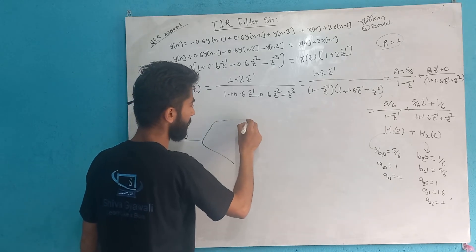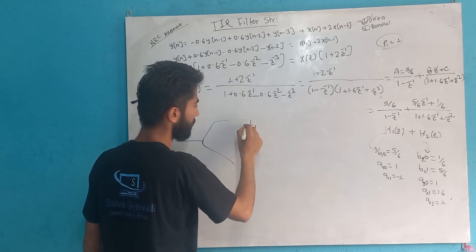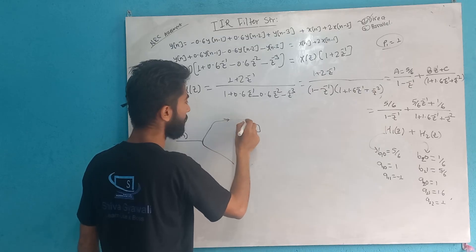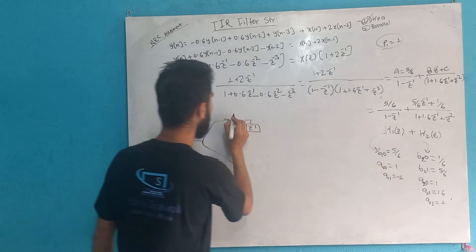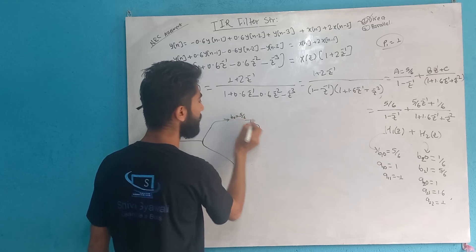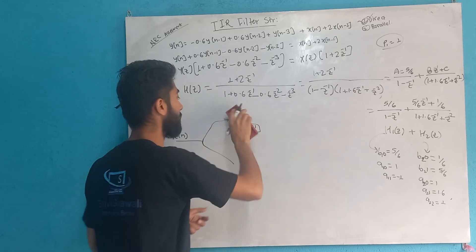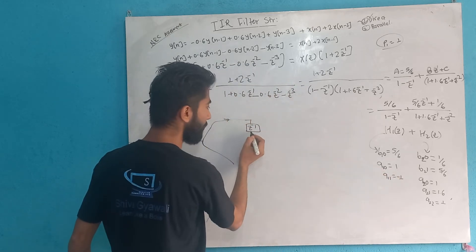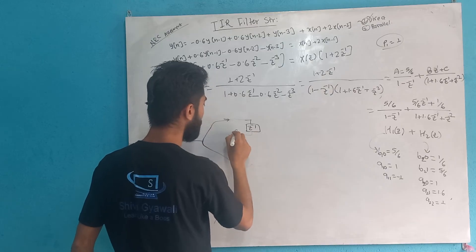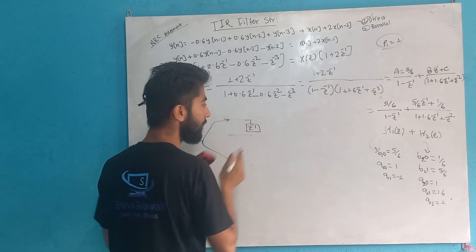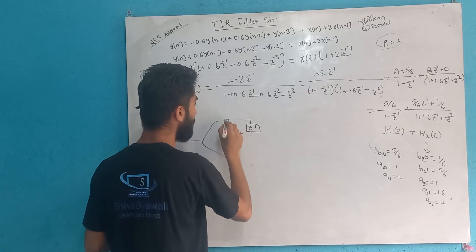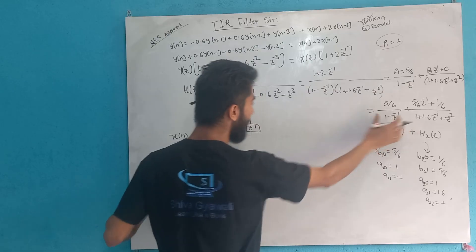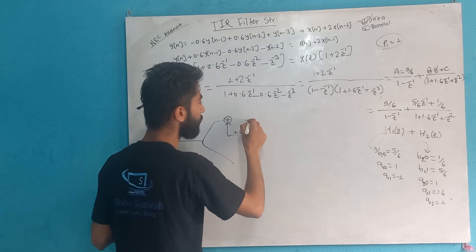So we need to do: B0 equals 5 by 6. If we need to do A1 equation, then A1 equals minus 1. We take here: 1 minus z-inverse. So A2 means the second section uses 1 minus z-inverse. This is the first part building the diagram symbol, and for the second section we implement it below.